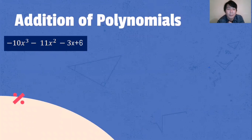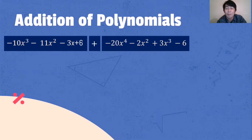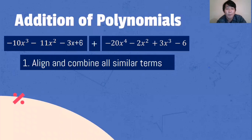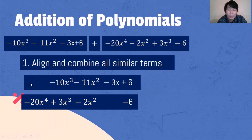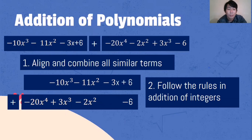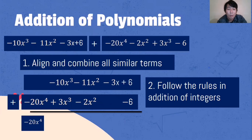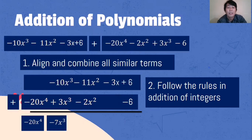Next one: negative 20x⁴ minus 10x cubed minus 11x squared minus 12x squared plus 3x cubed minus 6. Our first step: align and combine all similar terms. I put a space where there's no value for x⁴ on one side. Negative 20x⁴ is brought down because there's nothing to add. Negative 10x cubed plus 3x cubed — we have different signs, subtract then follow the sign of the higher absolute value — the answer is negative 7x cubed.